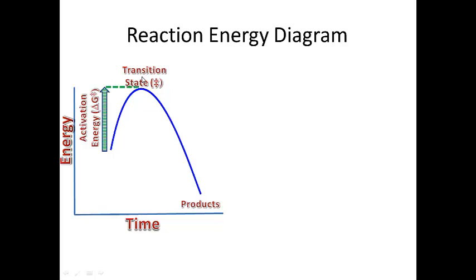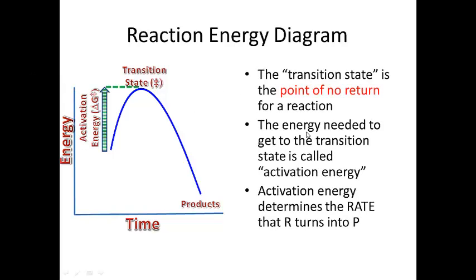The transition state is just what it says: it's a state of transition as you go from reactants to products, happening somewhere in the mechanism. The transition state is the highest energy point on the curve, basically midway between the reactants and the products. Then you go from the transition state down to products. The activation energy is the amount of energy it takes to go from reactants to transition state — it's also called a barrier because it controls the rate of the reaction.